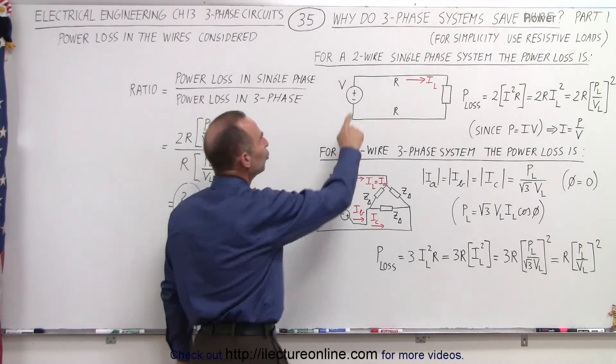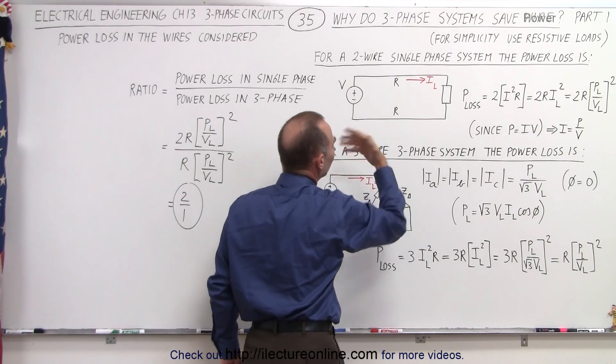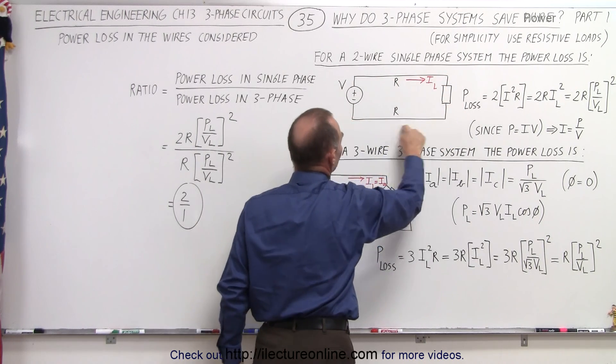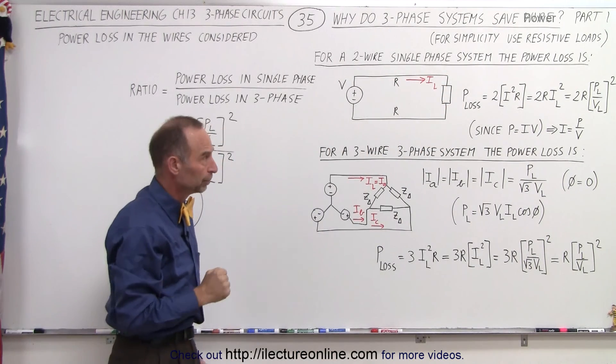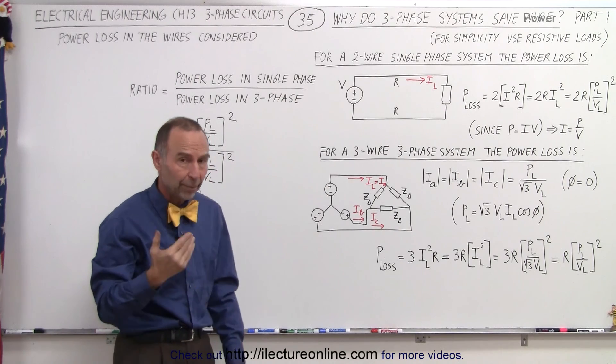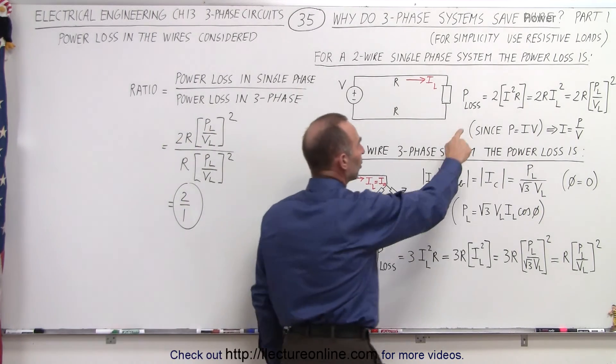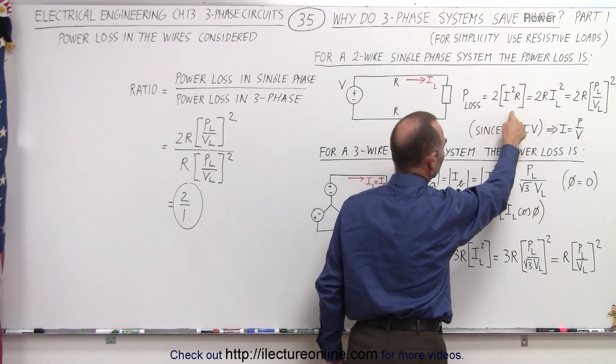So if we have a two-wire single phase system, what is the power loss? Of course, we have to consider the power loss on the wire going and the wire coming back from the load. Since we know that the power loss on the wire is I squared R and there's two wires, the power loss, therefore, is twice I squared R.